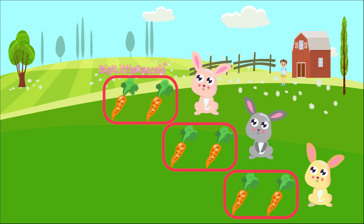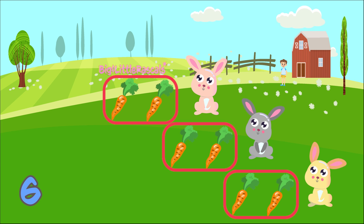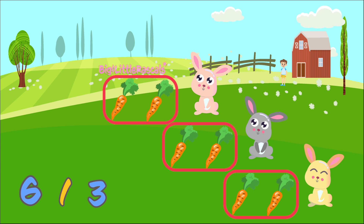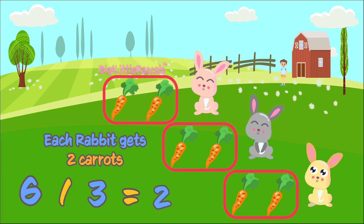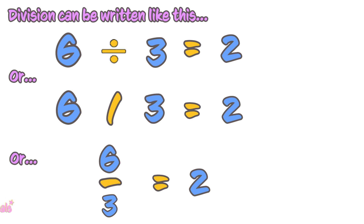So that's about division — we divided a number into smaller groups equally. In this example, 6 carrots divided equally for 3 rabbits, and each rabbit receives 2 carrots. Division can be written like this: 6 divided by 3 equals 2.